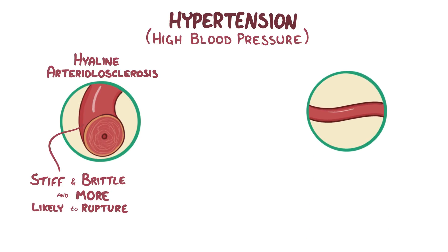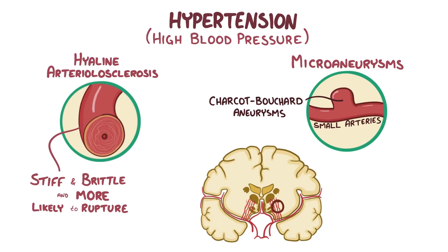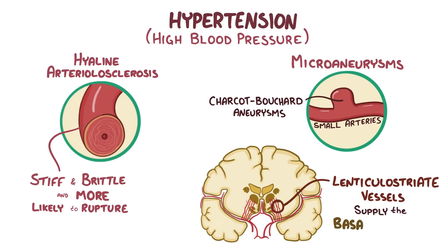Hypertension can also cause tiny bulges in the walls of the small arteries called microaneurysms. These microaneurysms are called Charcot-Bouchard aneurysms, and they're more likely to be found on small arteries like lenticulostriate vessels, which arise from the anterior part of the circle of Willis and supply the basal ganglia.